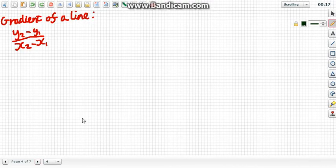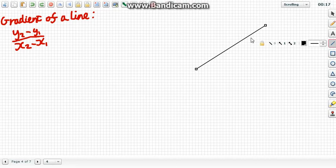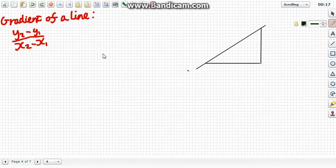Next up, gradient of a line. This one, again, if we have our random line, everybody should know from GCSE that to work out the gradient, you can make a triangle just like this, and you do the y value difference divided by the x value difference. And this is just a nice formula way of writing that, rather than having to draw out a diagram and do other little bits of maths.